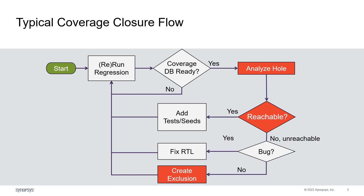Or it could be excluded from coverage goals as they are expected due to legacy code or parameterized code. In either of these cases, the reviewing process requires deep design knowledge, which means premium time taken from designers. Manual exclusion process takes a lot of work and needs constant re-evaluation during active RTL development. This is an iterative process until your coverage sign-off criteria is met.